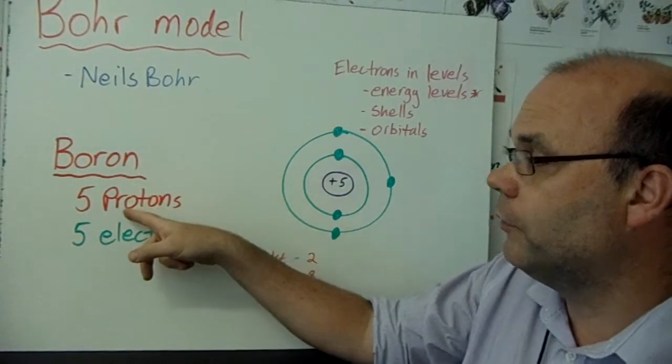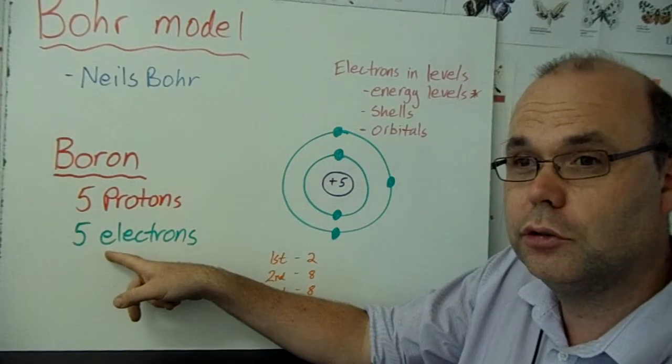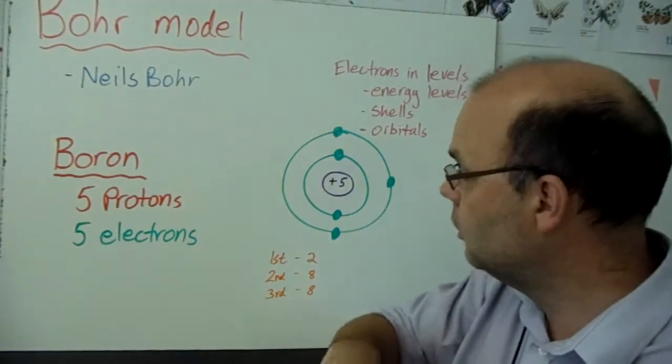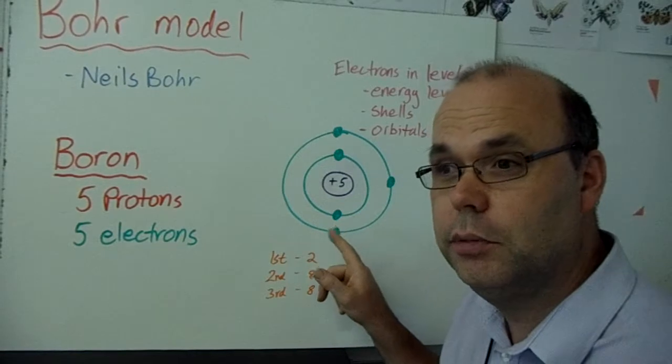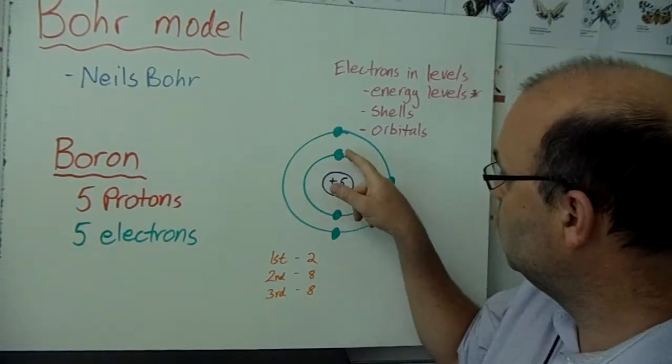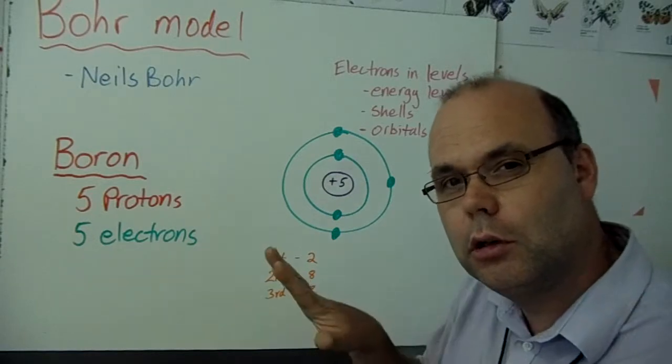We're going to look at boron. It's got five protons and five electrons. Now, all five electrons would like to be in the first energy level because it's the most relaxed. But only two can fit. One, two. Then it's full. No more room.